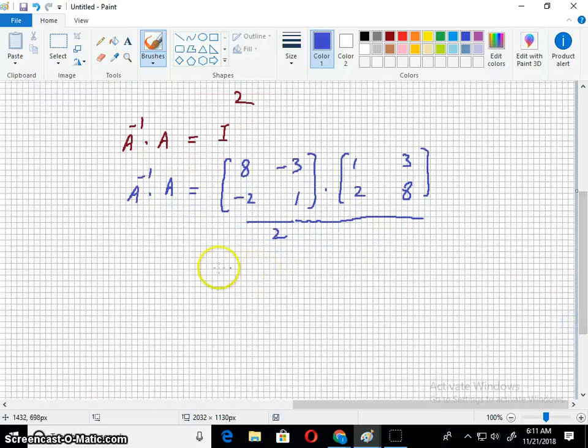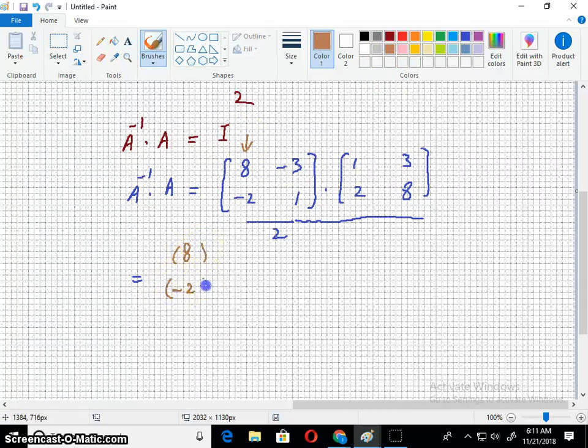Here I would like to multiply the numbers. The method for multiplication is: take this whole column, eight and negative two, and I shall multiply it with this number, which is one. Then I would apply a positive sign here and take this whole column, negative three and one, and I shall multiply it with the second number, which is two.